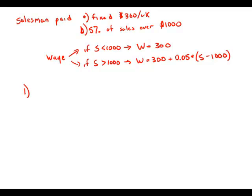Statement number one tells us the total amount that the salesman was paid last week — his total wages — equals 10% of his amount of sales, so 0.1 times sales. Do we know which case we're in? Suppose he made less than $1,000 in sales and only got paid $300. Well, $300 would be 10% of $3,000, but if he made $3,000 in sales, he wouldn't be in case one. So it's impossible for him to be in case one — he has to be in case two.